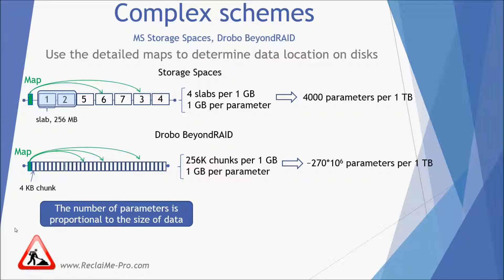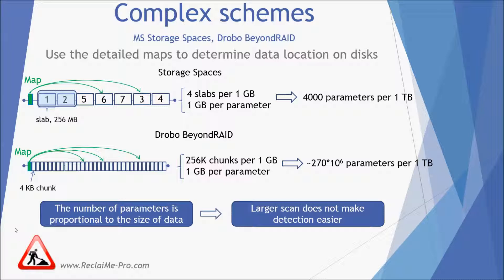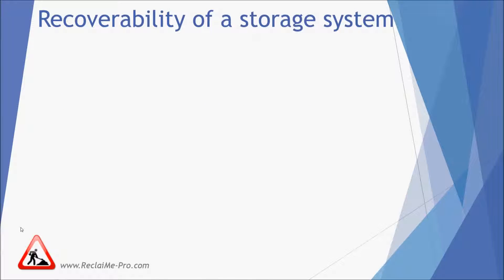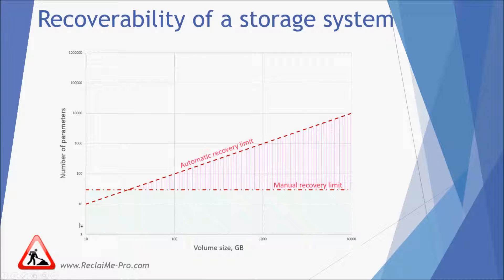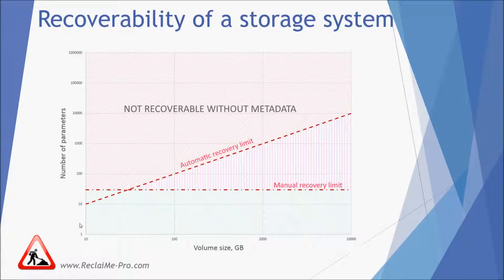The growing number of parameters very quickly makes it impossible to recover them manually, because the task is too big. Now let's illustrate all of this and depict how the number of parameters depends on the volume size. The first assumption is that a human can detect up to 50 parameters. Also, in case of automatic recovery, it is required to analyze at least 1 GB of data per parameter. So we get the manual and automatic recovery limits. The green area corresponds to cases when recovery is possible in manual mode, while the red area covers cases when only automatic recovery is possible. Note that automatic recovery implies detection of parameters by analyzing data rather than just reading system metadata. Anything above the automatic recovery limit corresponds to cases when recovery is impossible without metadata.